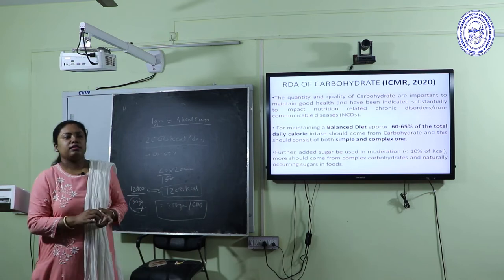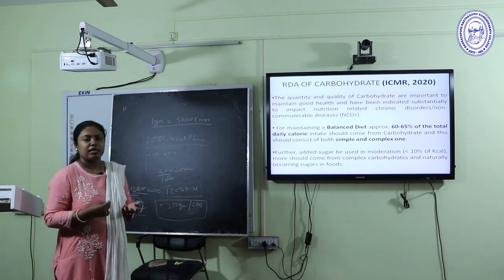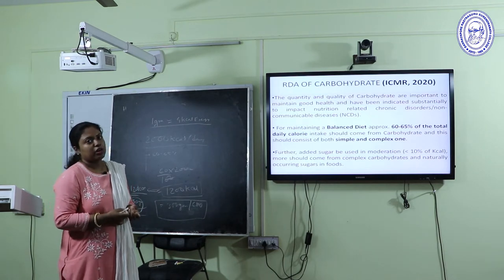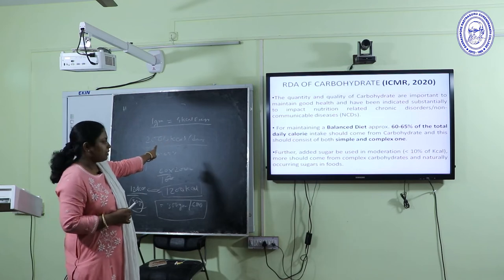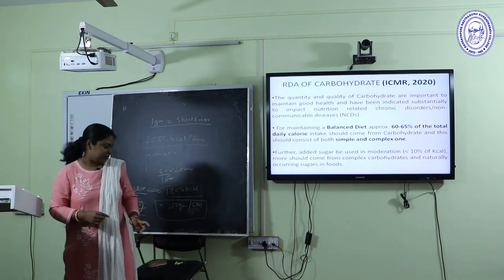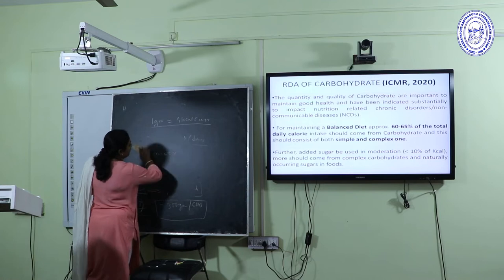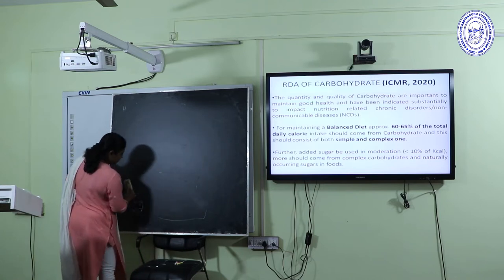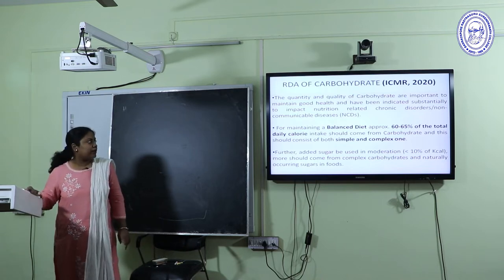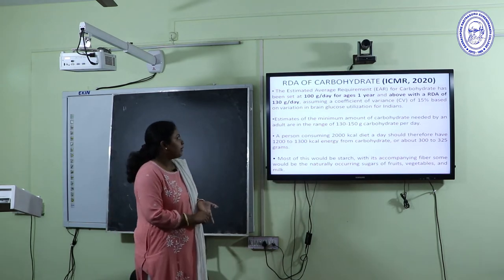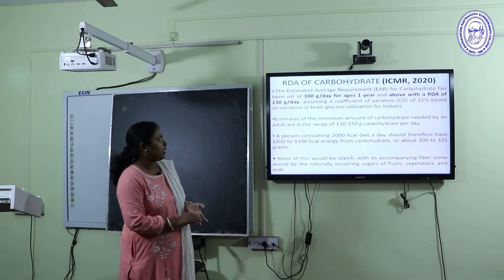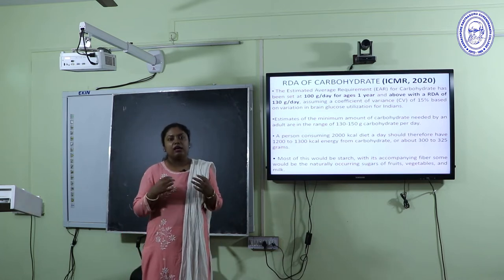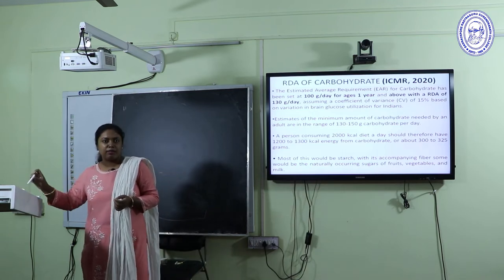So sugar intake — whether table sugar, jaggery, honey, or any simple sweetened product — should always be limited to 30 grams per day for a person whose RDA of energy is 2000 kilocalories. There is also always a minimum requirement. As per ICMR 2020, 100 grams per day for ages 1 year and above, and for adults, 130 grams per day is the advisable minimum, because this is the basic requirement essential for proper functioning of the brain, muscles, heart, etc.